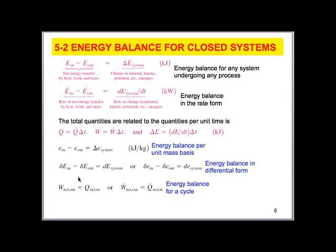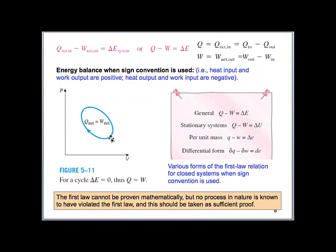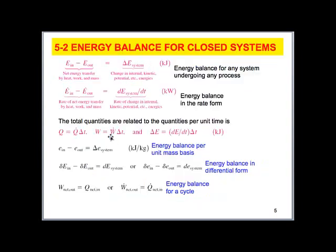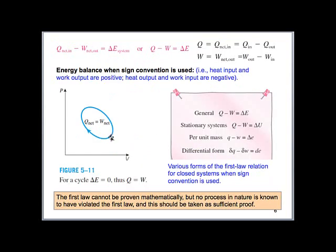The first law can be written per unit time — units of watts — or in joules, or per unit mass. For a cycle, where we start at point 1, go through the cycle, and return to point 2 at the same state, the change in internal, kinetic, and potential energies is zero. This means the heat transferred to the system equals the work done by the system — simplifying the first law for a cycle.